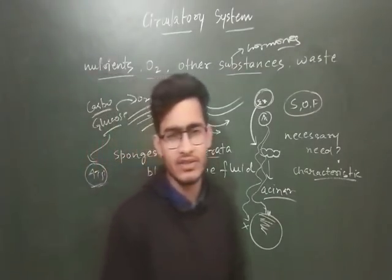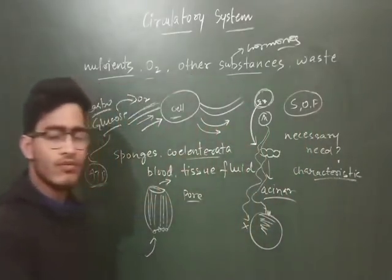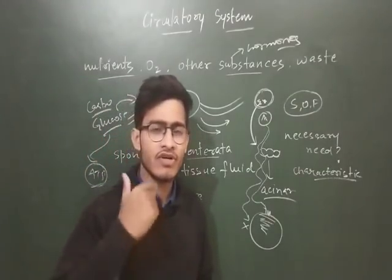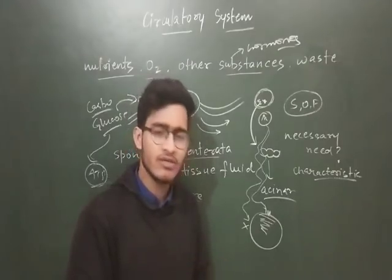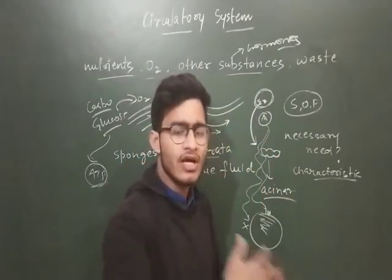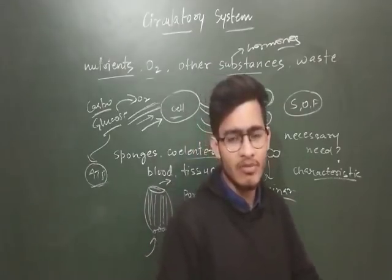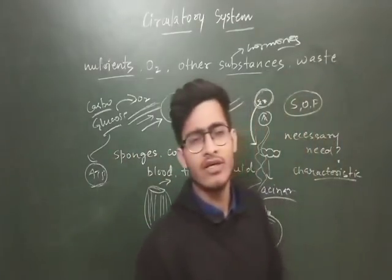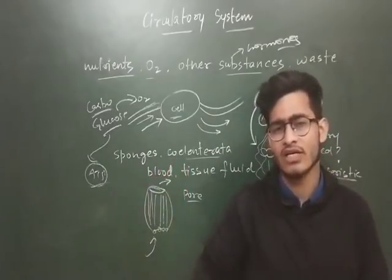After that, in coelenterates, there is also a similar kind of arrangement. But when we talk about higher vertebrates such as human beings, we have different kinds of fluids that do this work. With blood flow, different kinds of things are carried — in the respiration chapter we talked about hemoglobin carrying oxygen. Different kinds of nutrients, hormones, and growth factors are also transferred via blood, and different kinds of waste products — for example carbon dioxide — are removed from the cell via the blood.